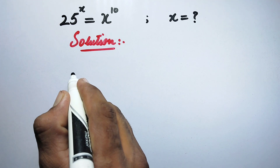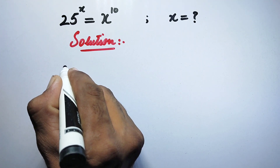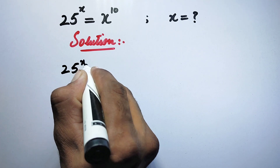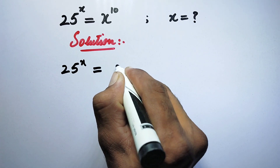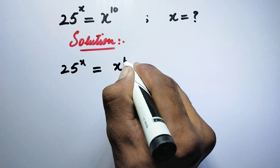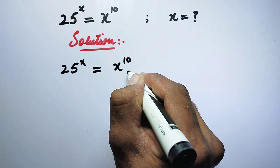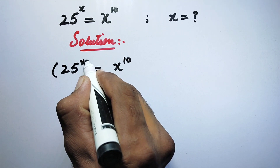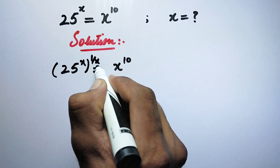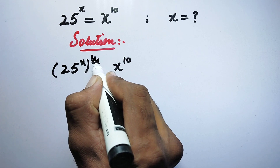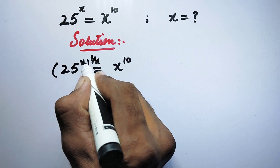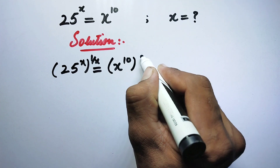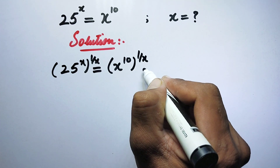So here in the first step we will write 25 to the power x is equal to x to the power 10, and we will raise both sides of the equation to the power of 1 over x. We have done so to eliminate this power, so here we will also take the power of 1 over x.